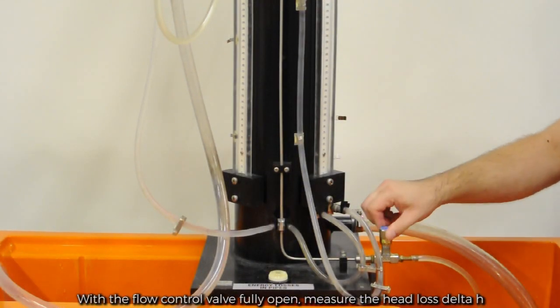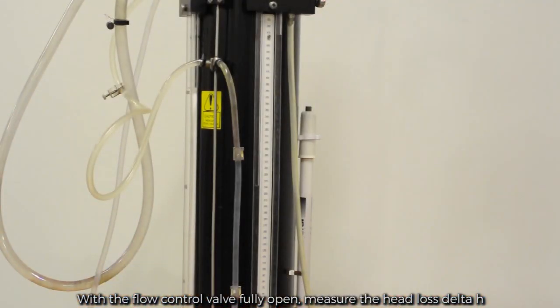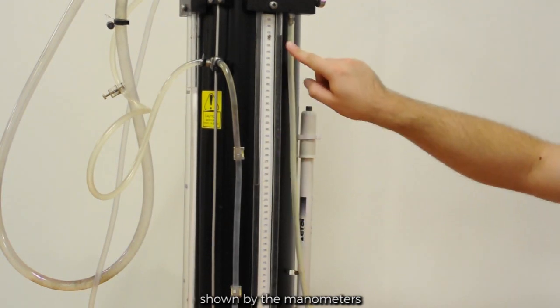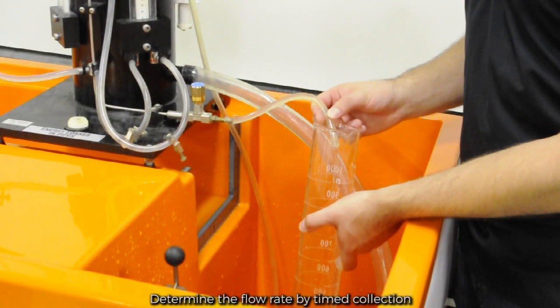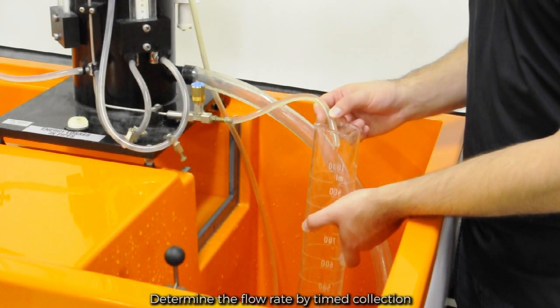With the flow control valve fully open, measure the head loss delta H shown by the manometers. Determine the flow rate by a time volume collection.